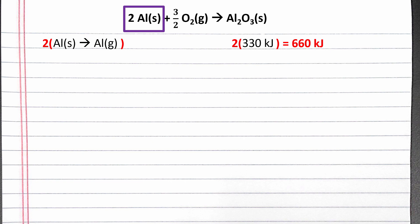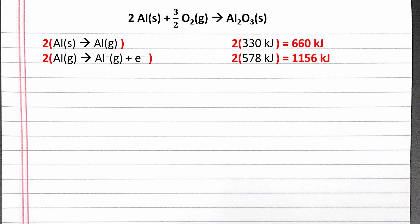The next information we're given is the first ionization energy of aluminum, which is the amount of energy required to remove an electron from a gaseous aluminum atom to produce a gaseous aluminum cation with a 1+ charge. This equation has aluminum gas, and in the sublimation equation we added two moles of aluminum gas as a product, which does not show up in the overall equation. So we multiply the first ionization energy equation by two so that the two moles of aluminum gas as a reactant cancel out the two moles from the previous step.